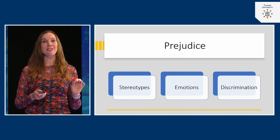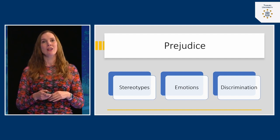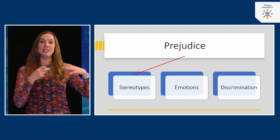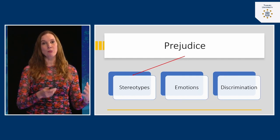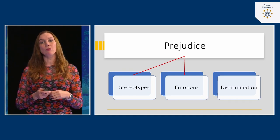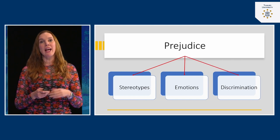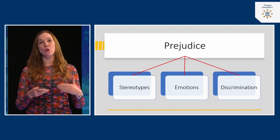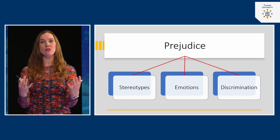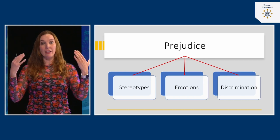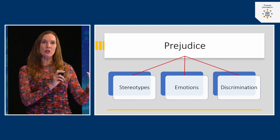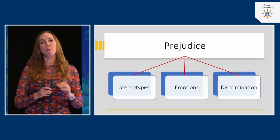With prejudice, you will recognize some familiar concepts. The cognitive part of prejudice is stereotypes, which capture all the knowledge we have about people from a specific group. Affect means the emotions that members of a certain group evoke. And discrimination means the behavior we show towards members of a group because of their group membership. These three components together are captured under the umbrella term of prejudice.